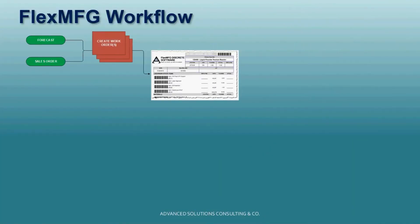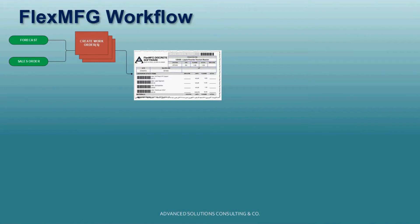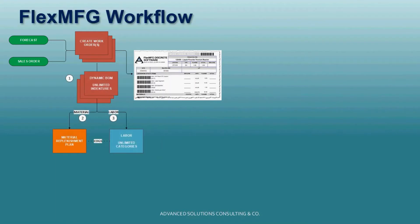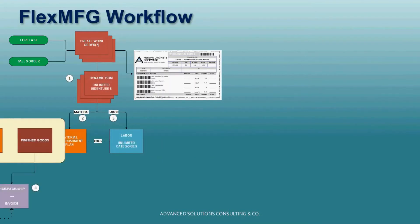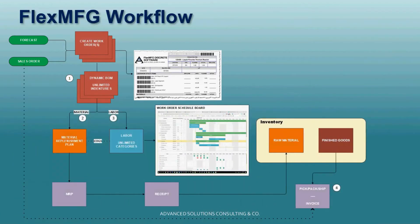FlexMFG is comprehensive. Demand may be via an integral forecasting tool, a sales order, or a work order from which a traveler is generated. BOMs on the work order consist of both labor and material. An MRP2 routine determines raw material requirements with POs automatically generated.